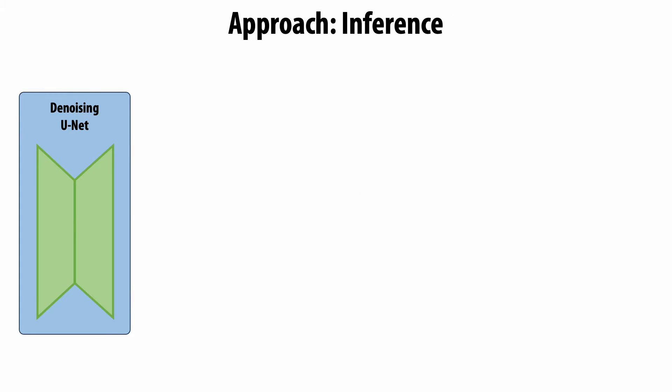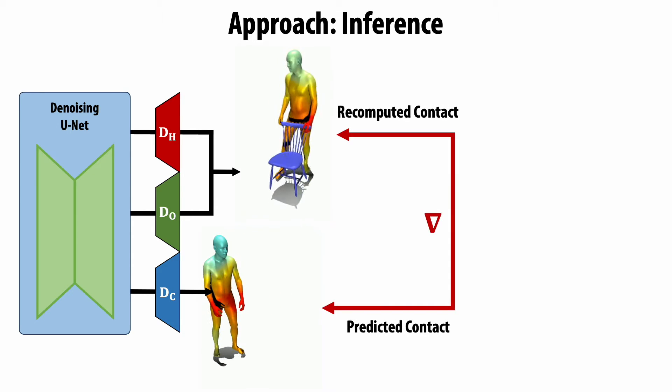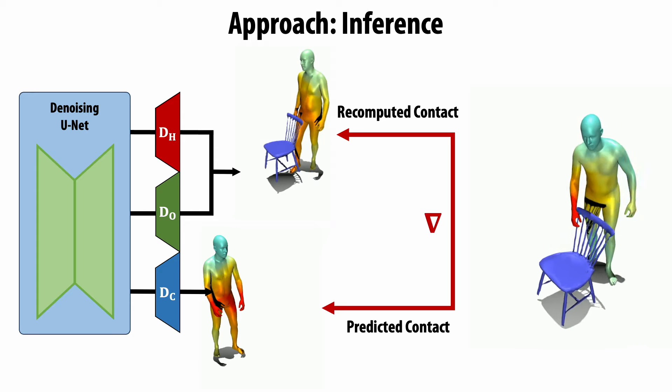During inference, we then generate bodies, object motion, and contact, and use the predicted contact to guide body and object motion generation for more physically plausible interactions.